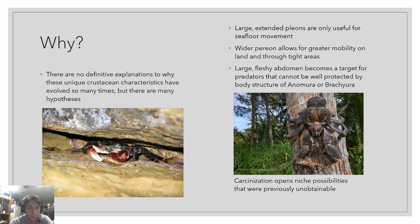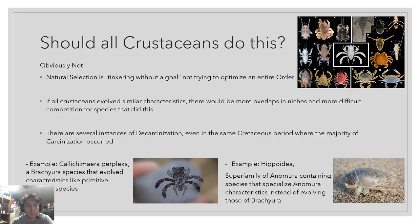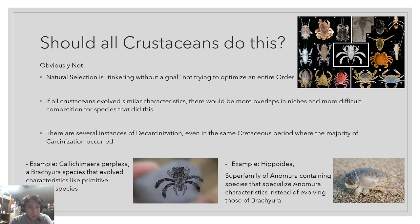Carcinization opens up crabs to new niche possibilities that previously weren't available. But should all crustaceans be doing this? No — natural selection is tinkering without a goal. If all crustaceans were to form this way, they would all be competing for the same thing, and you wouldn't want 500,000 competitors doing the same thing. Speciation is good. The fact that we have Anomura and Brachyura is good. And there are several instances of decarcinization — the reverse process — happening even during the same Cretaceous period when carcinization was occurring.